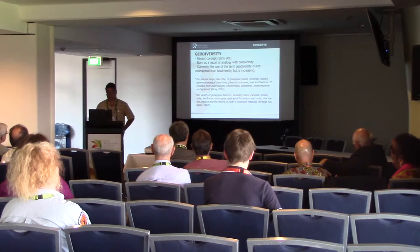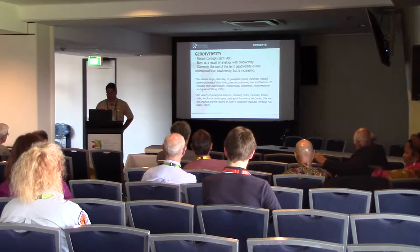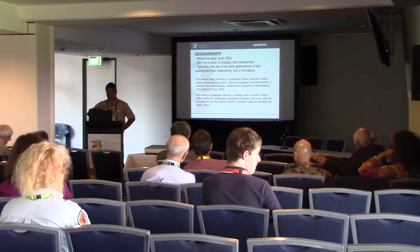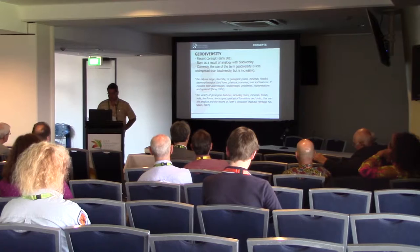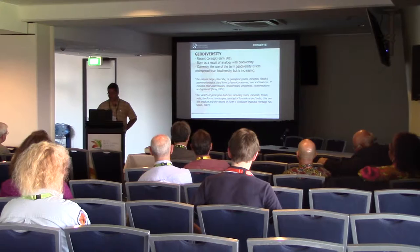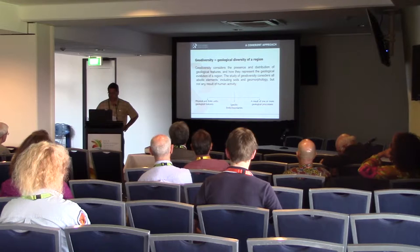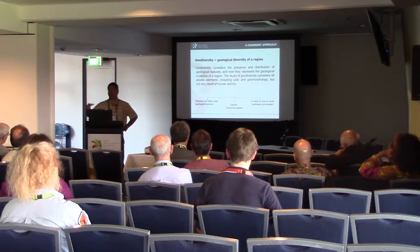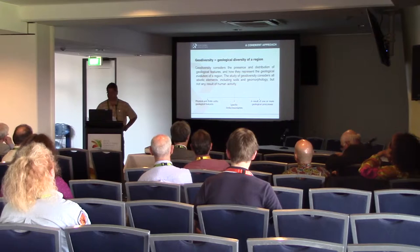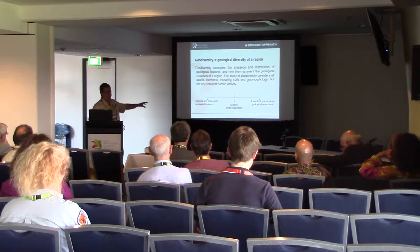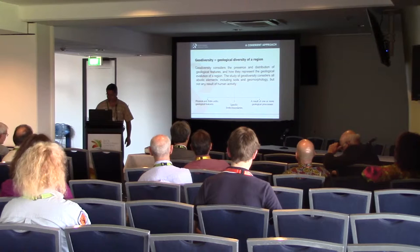The concept of geodiversity was developed very recently, in the 90s, after the biodiversity concept. It's analogous to biodiversity and has suffered some of the same problems with reference to the elements and the diversity. There are several definitions, but generally it covers the variety of elements — it's a measurement of the variety. It has to always be specific to a region, because it depends on what you are talking about, whether diversity will be high or low. So it's always important to specify where you are talking about, the specific scale, and also the limits of the area you are referring to.